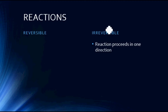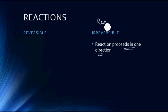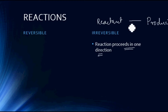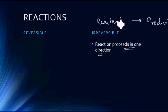An irreversible reaction proceeds only in one direction. On the left hand side you have a reactant and on the right hand side you have a product, and the reactant changes into product — that is, the things on the left hand side change themselves into things on the right hand side. When talking about reactions, we can talk about both a physical process or a chemical reaction.